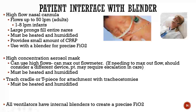Another interface is the trach collar, used with tracheostomy patients to keep them heated and humidified, and on oxygen if needed — or just heat and humidity at room air. There are also T-pieces, which you'll see in lab. If a patient has a trach collar or T-piece, the upper airway is bypassed, so it must always be heated and humidified. Finally, all ventilators have internal blenders — a proportioner — to create a precise FiO2.